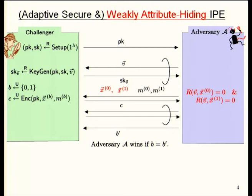Turning to the security notion, it is also defined in a generalized manner from identity-based encryption. A weak version of attribute-hiding security is given by this game, where the adversary asks several key queries. At some point, the adversary declares the challenge attribute and challenge messages. The key point of the weakly attribute-hiding case is that the adversary can only query keys for a non-matching key — that is, the relation for the queried vector and challenge attribute does not hold. This condition is essential in the weakly attribute-hiding setting.